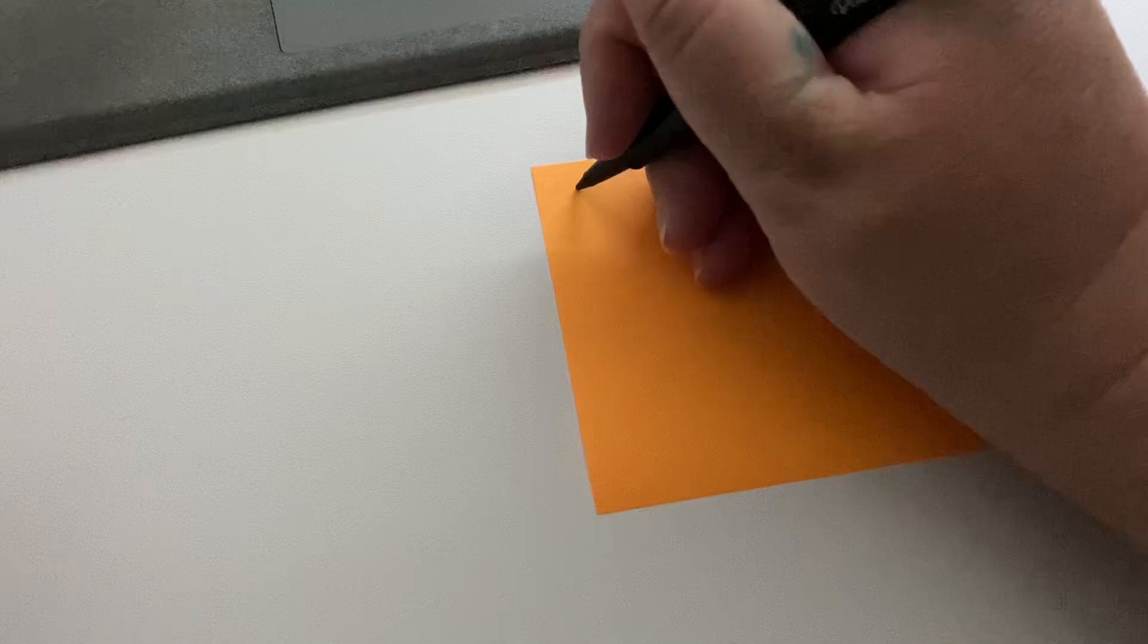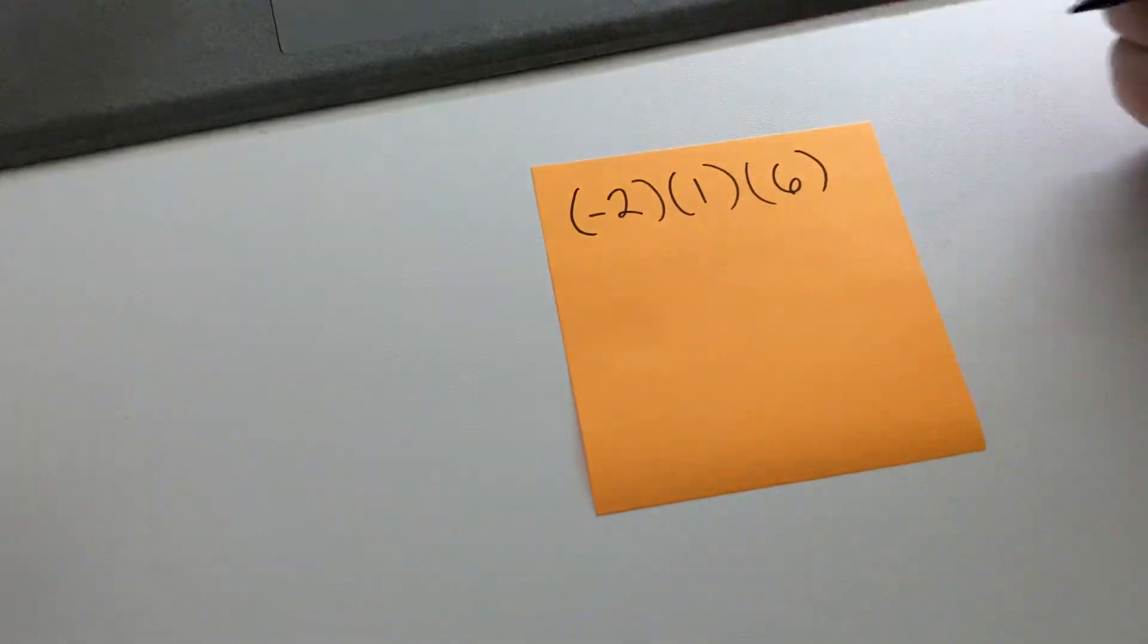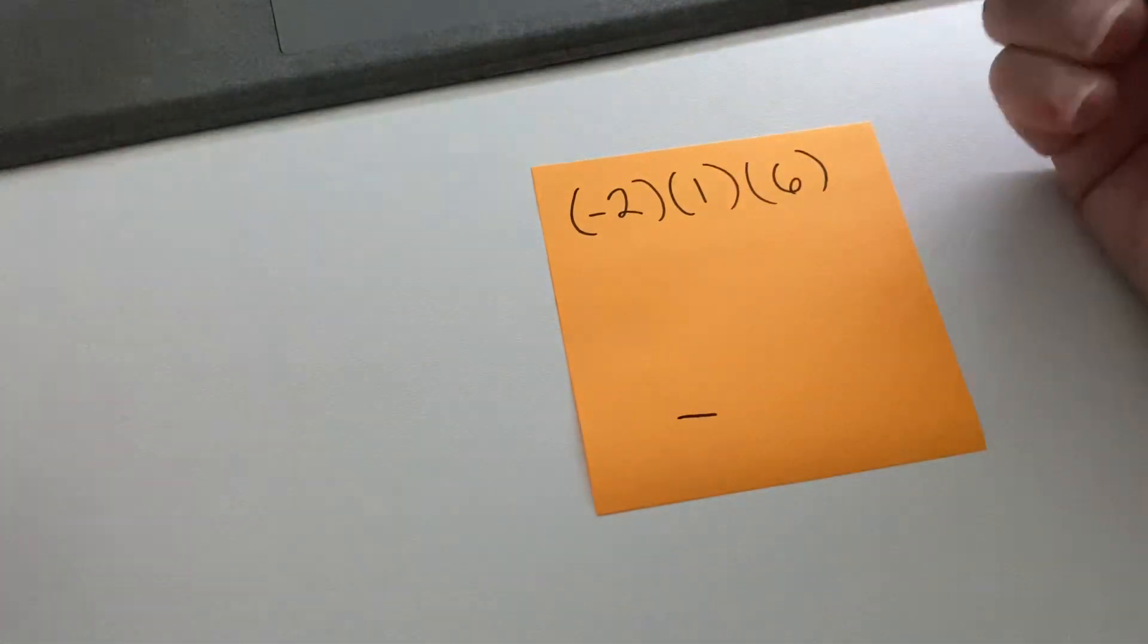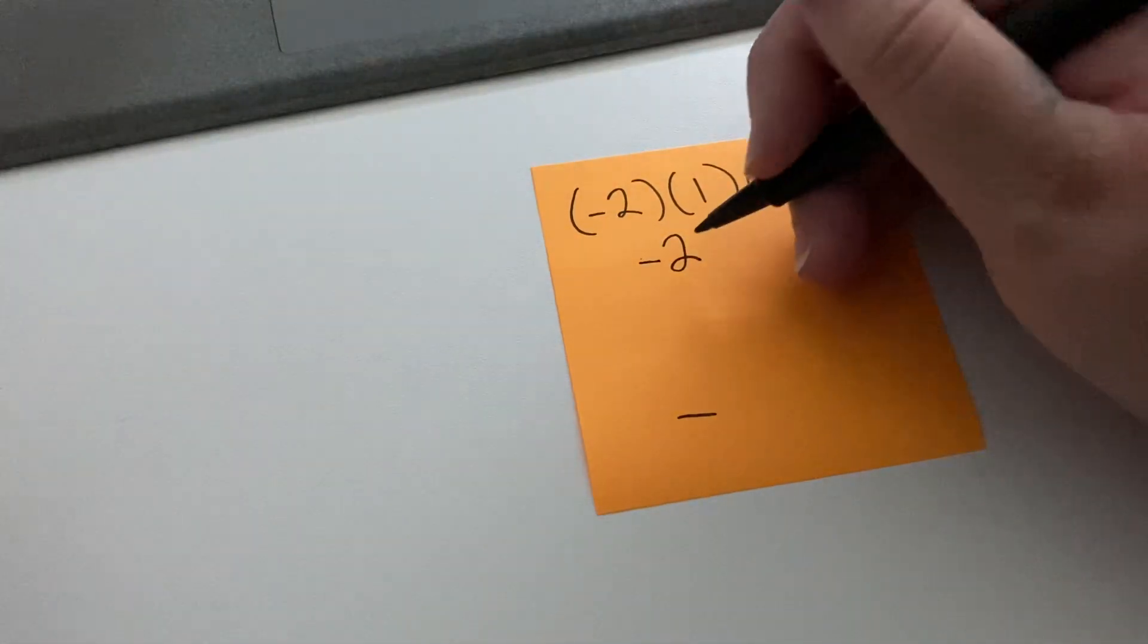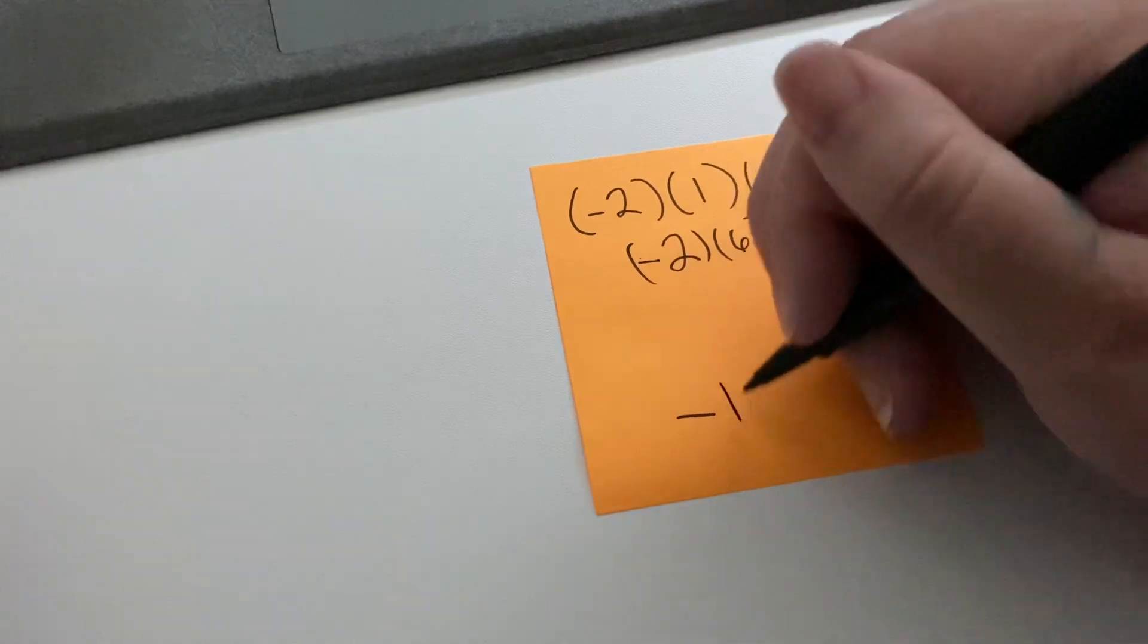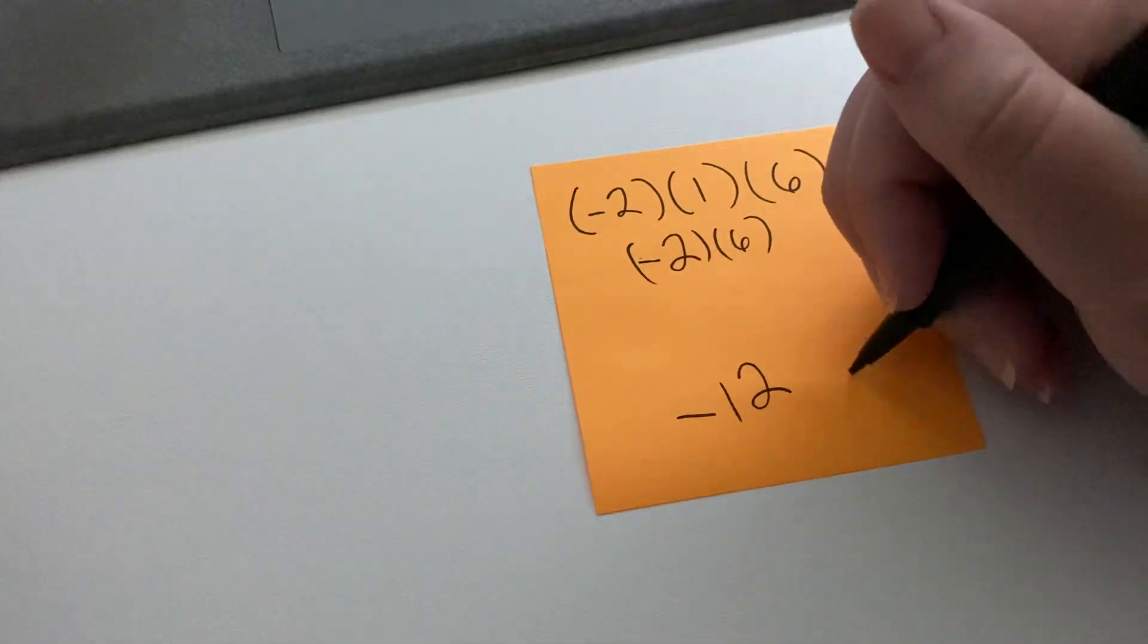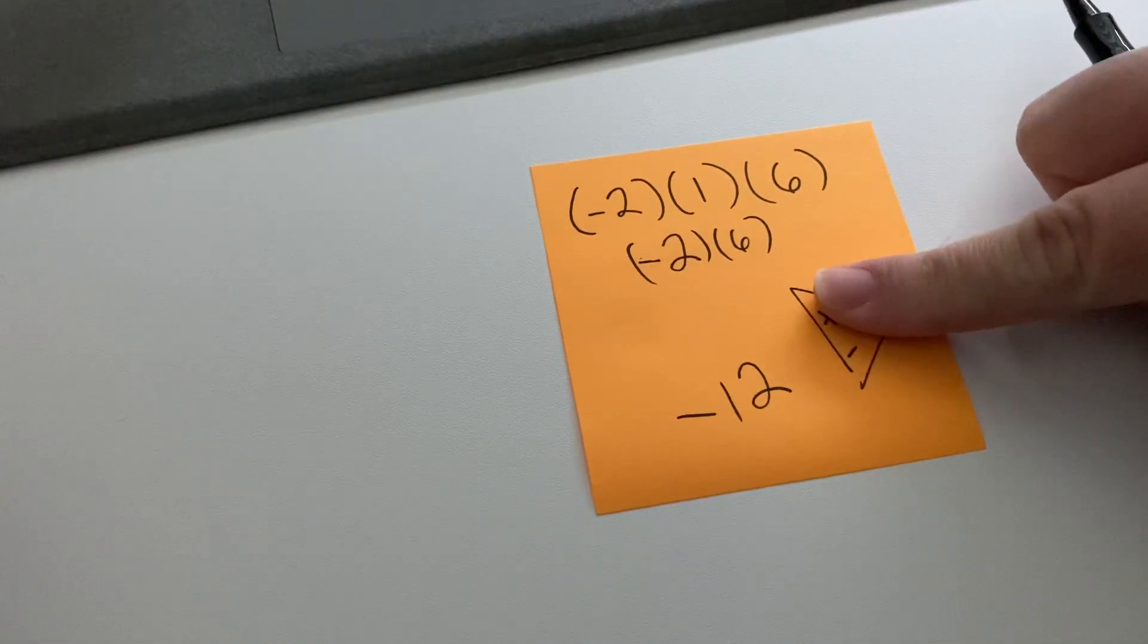And what if there is just one negative? So negative 2 times 1 times 6. Well, 1 is an odd number. We said with odd numbers, then if there's an odd number of negatives, then the answer will be negative. So we know the answer will be negative. So we can do this out. Negative 2 times 1 is negative 2. Negative 2 times 6 would be negative 12, because a negative times a positive would be a negative. And don't forget your triangle if you need it. A negative and a positive is a negative.